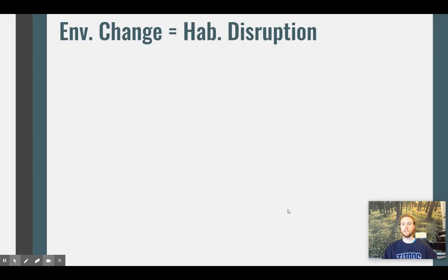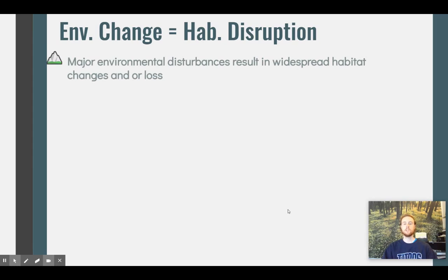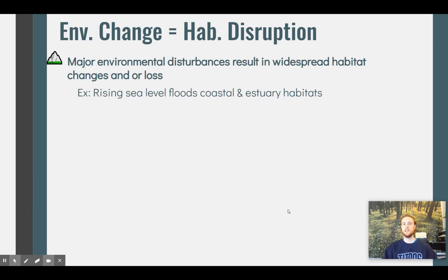Major environmental disturbances cause widespread habitat destruction, alteration, or loss. A key example is sea level rise, which causes us to lose coastal estuaries as they go underwater — they no longer function as brackish, part-salt, part-freshwater areas with exposed land. They become completely flooded, which changes how these habitats function, removes habitat for species that require land, and changes water depth, altering the plant community.